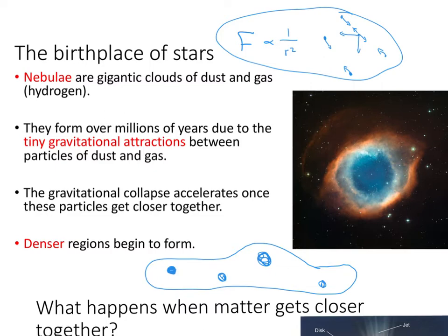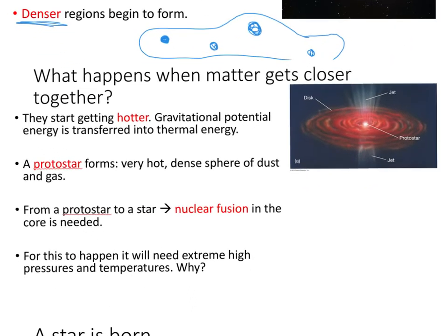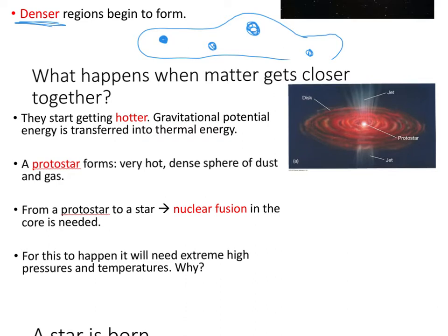When matter gets close together and denser regions start forming, there will be more collisions, faster motion, and they will move faster. We know that increases the speed of the gas, so gravitational potential energy from the gravitational collapse will be transferred into thermal energy. Since a denser region forms in the nebula that starts getting hot, we call that the protostar — a very hot, dense sphere of dust and gas. It looks like there's a disc around it of more gas and dust, but the main body is in the centre.